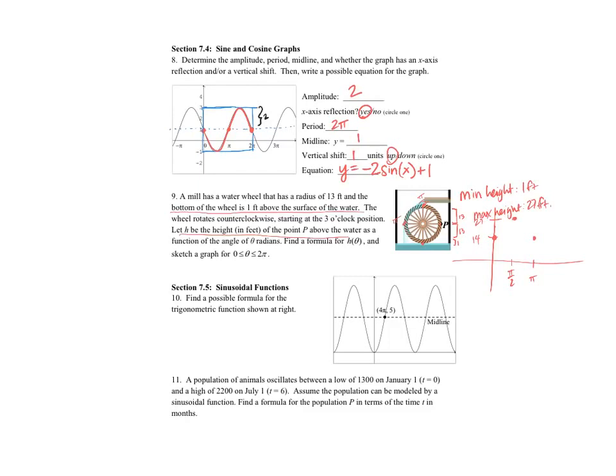And then when I am at 3 pi over 2 radians, down here at the bottom, the height of my point is 1 foot above the water. And then when I get all the way to 2 pi, all the way back around, my height goes back to the height I started with, which was 14 feet above the water.